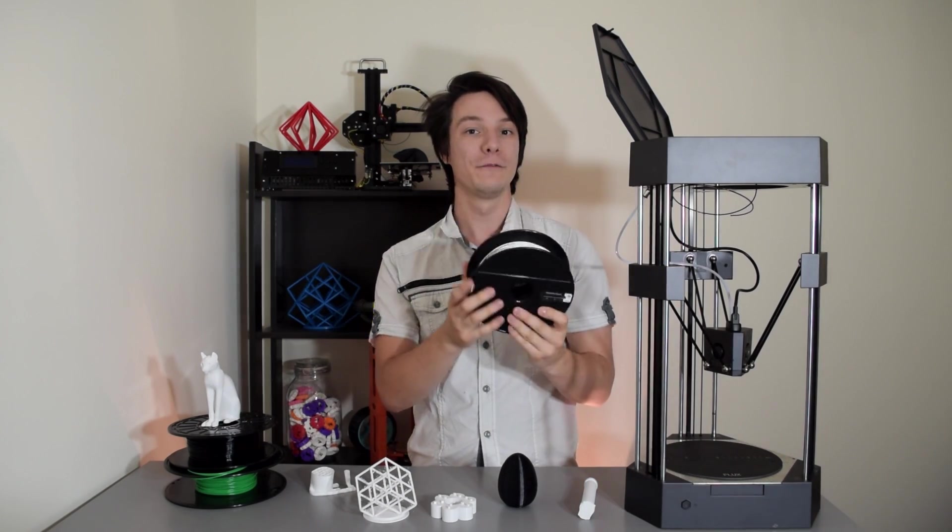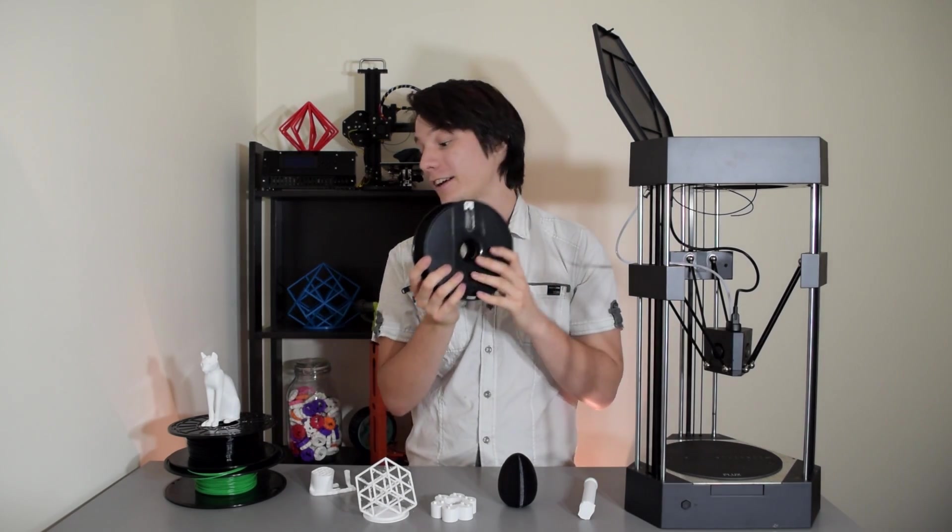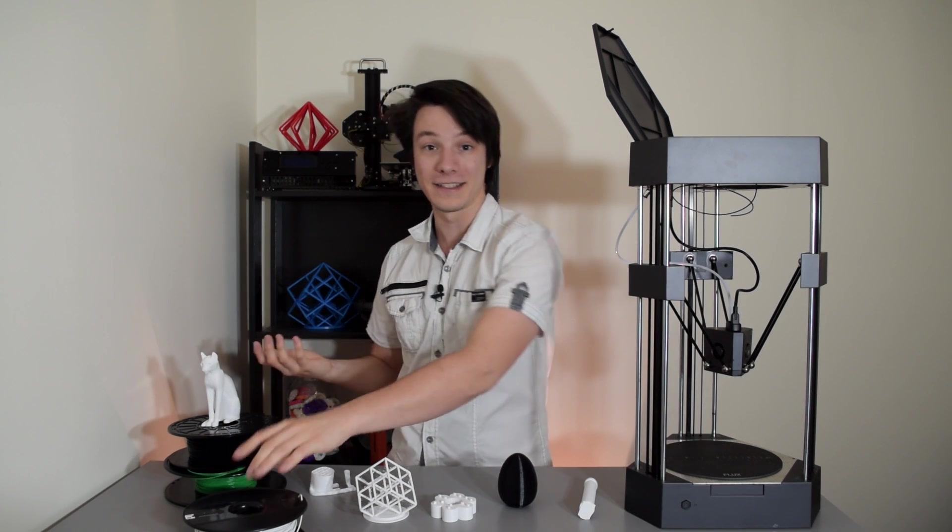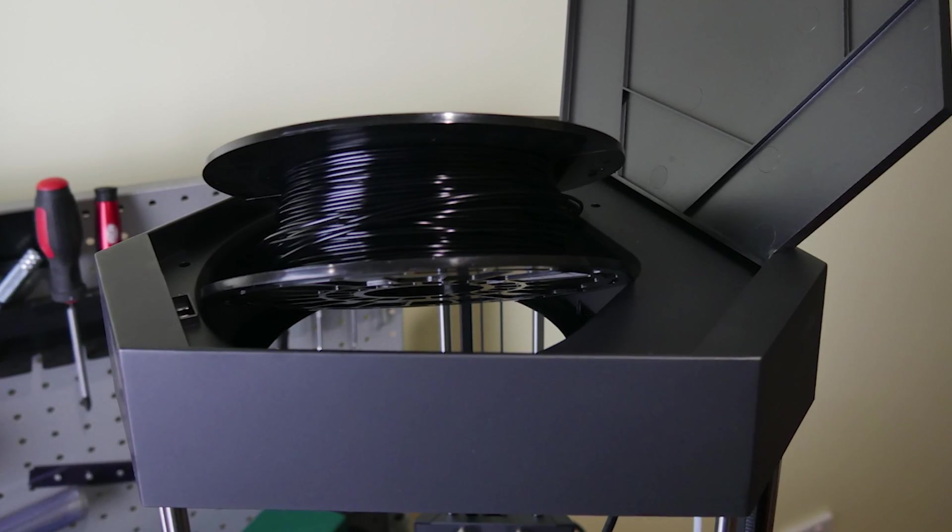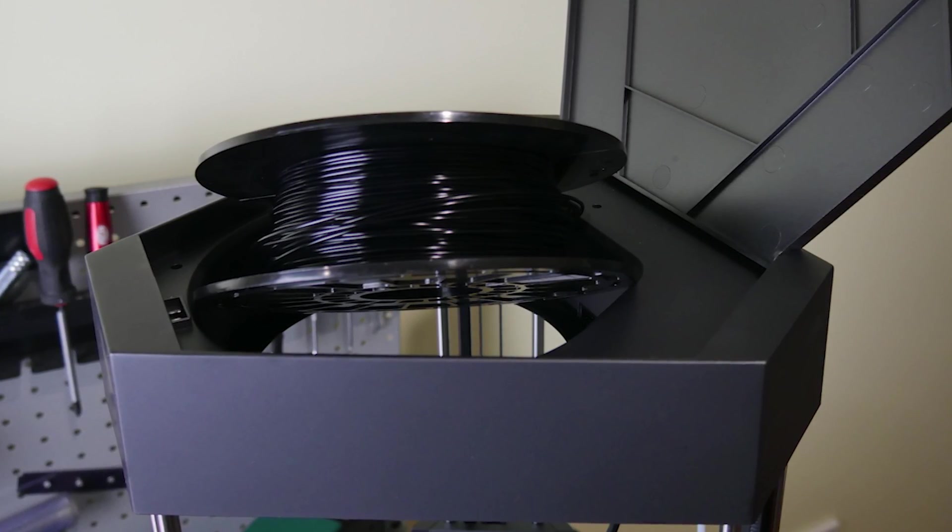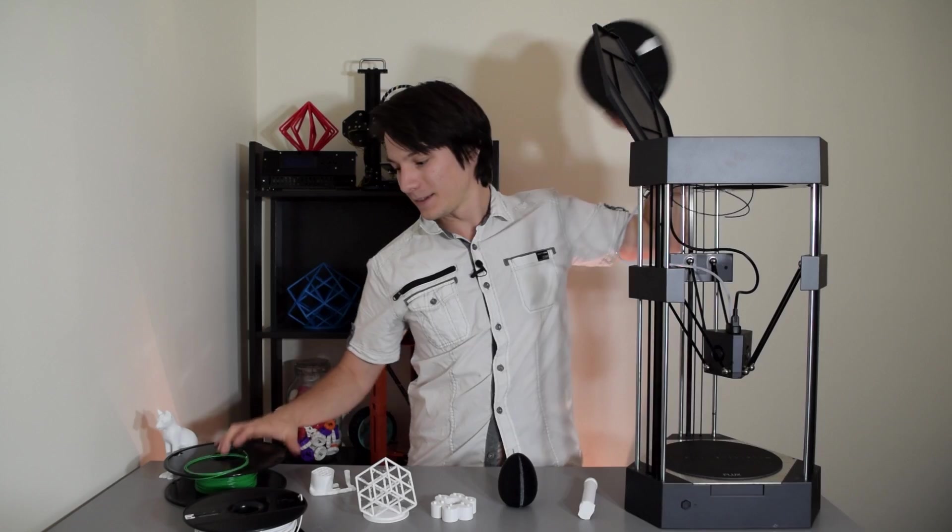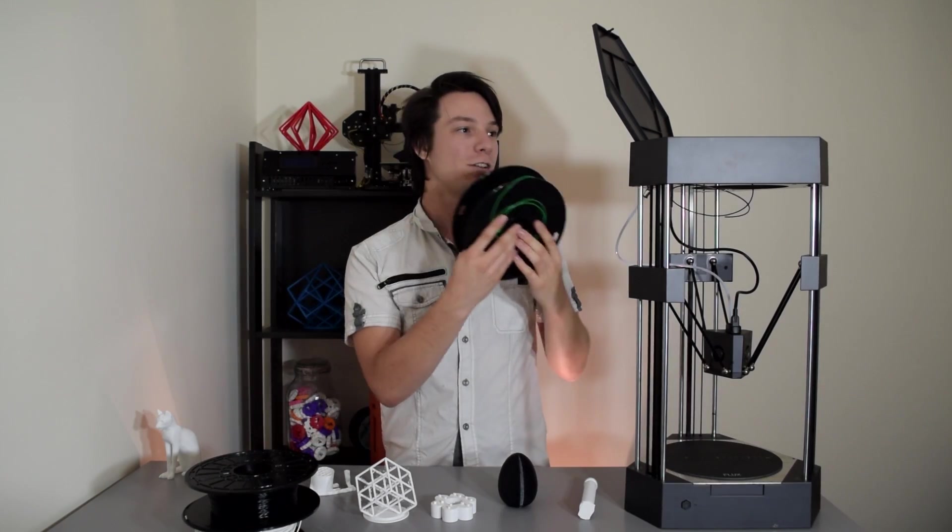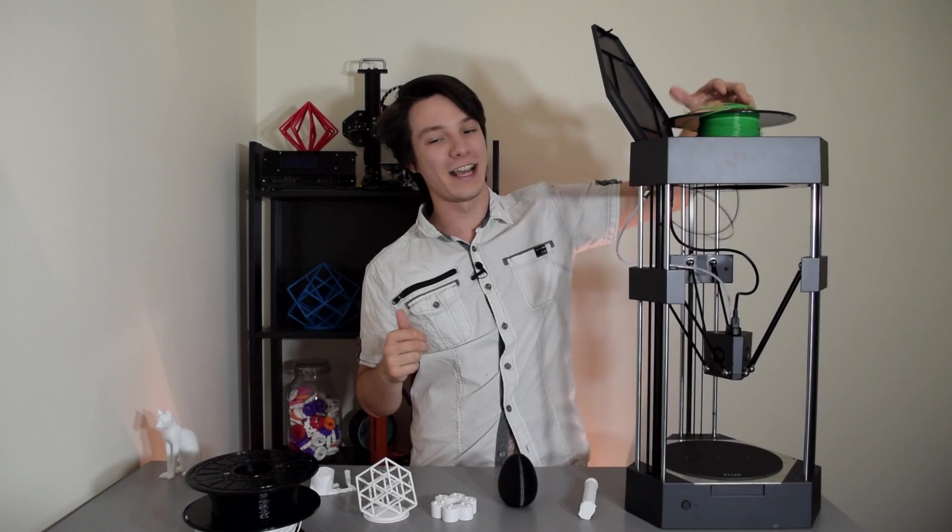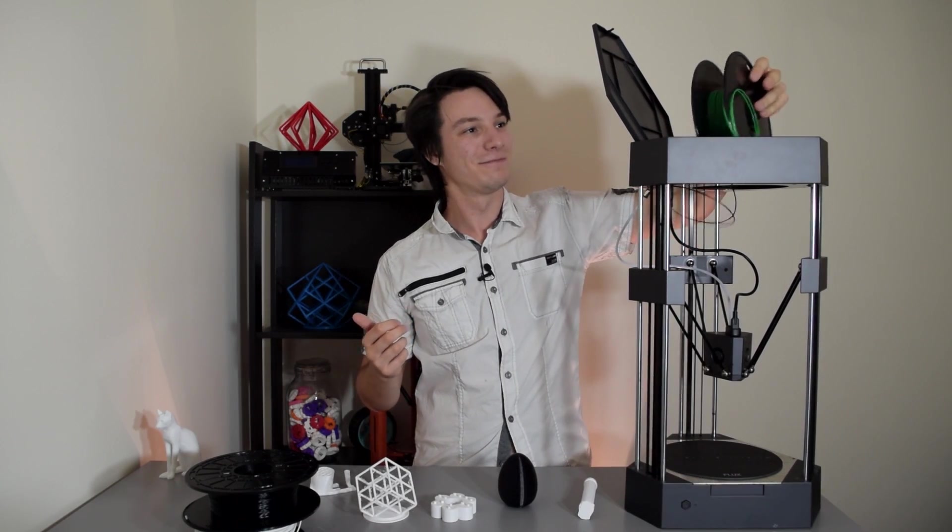That includes these small Flashforge filament spools. As you can see, it just won't get in there. And if you have a one-kilo roll, forget it. There's no chance at all that's going to go in.